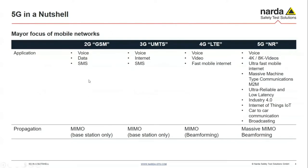We started with voice, data, and SMS in the 2G case. UMTS already offered access to the internet. With 4G we came into fast mobile internet. Now with the 5th generation there is a vast amount of functions and applications, including the internet of things, car-to-car communication, broadcasting, ultra-reliable and low-latency communications, and massive machine-type communications. Especially here in Germany we see a lot of introduction in industrial plants — it's not only telephony but also interconnection between machines.